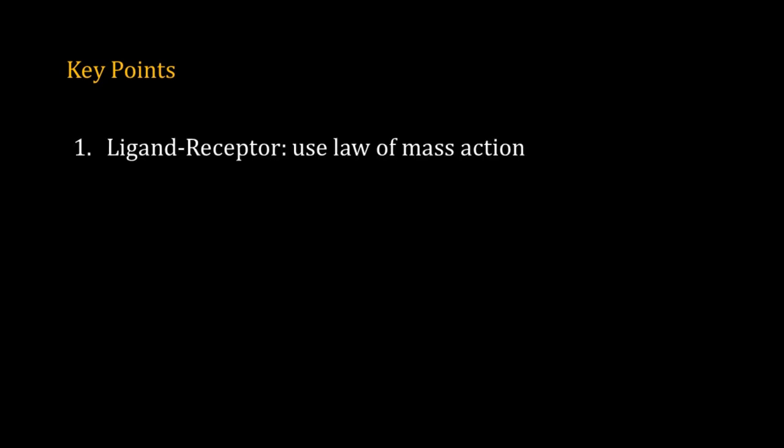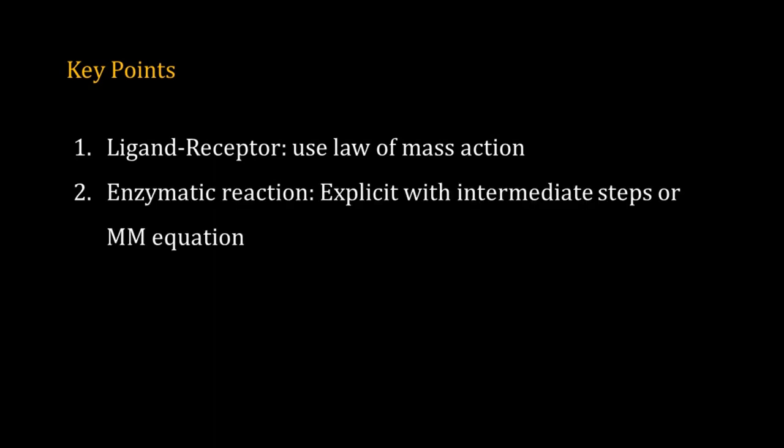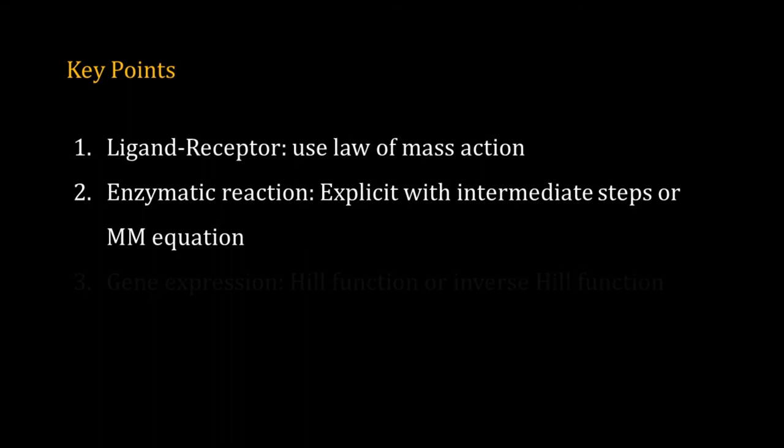In this video we have learned to create ODE-based models for a few elementary processes. We use the law of mass action to model ligand-receptor interaction. For an enzymatic reaction, you can write a system of ODEs considering all intermediate steps explicitly, but that may increase model complexity; to reduce the number of ODEs and parameters, you may use the Michaelis-Menten equation. Gene expression is modulated by transcription factors and inducing signals: use the Hill function for activation and the inverse Hill function for inhibitory signals. I hope you can now combine these equations and functions to create your own ODE-based model for cellular processes. Thank you for learning with me.